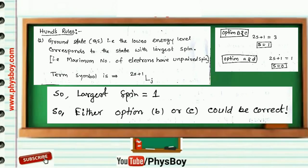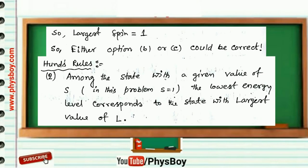by using Hund's rule number 2. That is, among the states with a given value of S, that is in this problem S equals 1, the lowest energy level corresponds to the state with largest value of L.